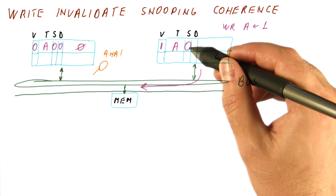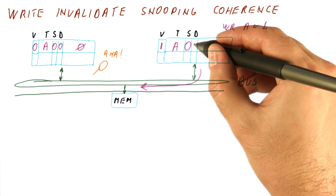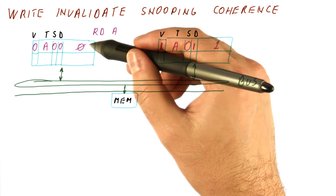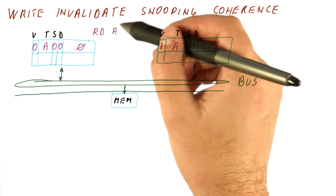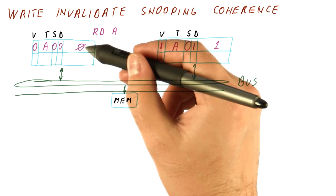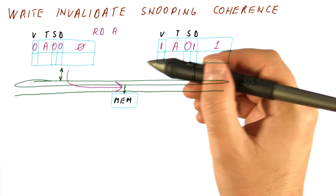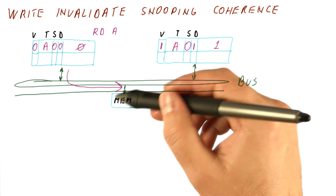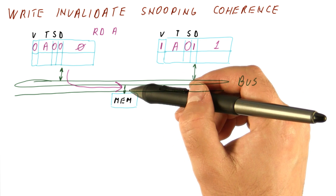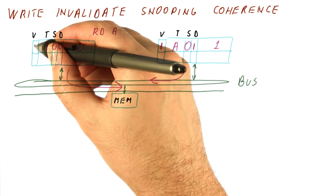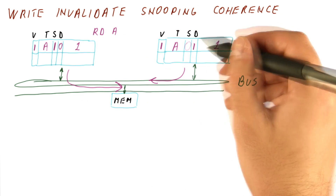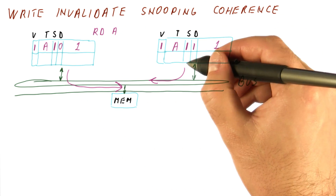So a write makes the block non-shared in the writing processor. It is dirty, and now has a value of one. A read of A in a write update protocol would be a hit, but in a write invalidate protocol, the read will still get the new value — it's not incoherent. It will be a miss and be sent to the bus. The memory has not been updated yet, but the processor holding the dirty data sees the read request on the bus and responds with the data, so the block becomes valid and shared.